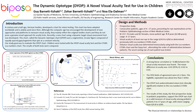The result of this study, the first prospective study in a pediatric population, supports the DYOP eye chart as a valid measure of visual acuity among pediatric patients at the ages of 14 to 17, with vision ranging between 6/4.8 to 6/60.